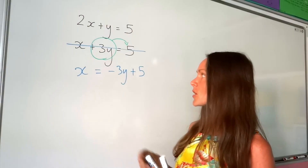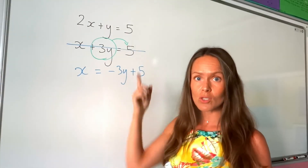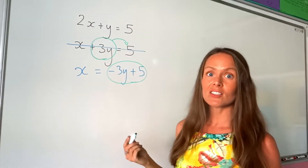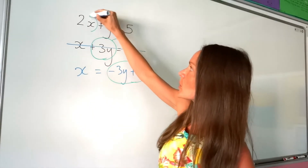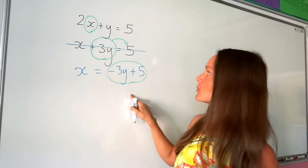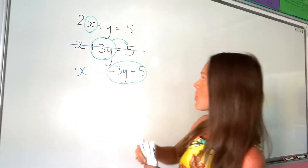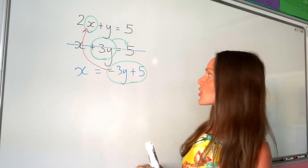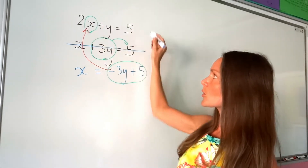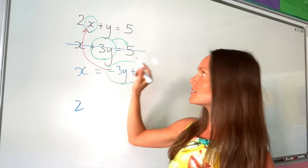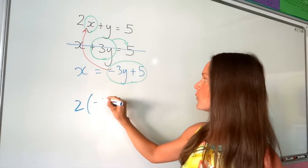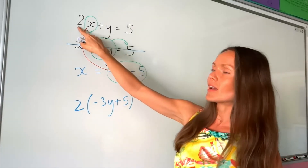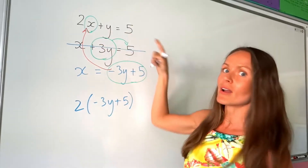So now, just like before, I can substitute this into the top equation. x is equal to this expression here, so I can change the x letter in the top equation to this, because they're exactly the same. I'm going to write out that top equation but instead of writing the letter x, I'm going to write this — not forgetting to put brackets around it, because we're multiplying all of it by the number 2. And then we've still got plus y equals 5.